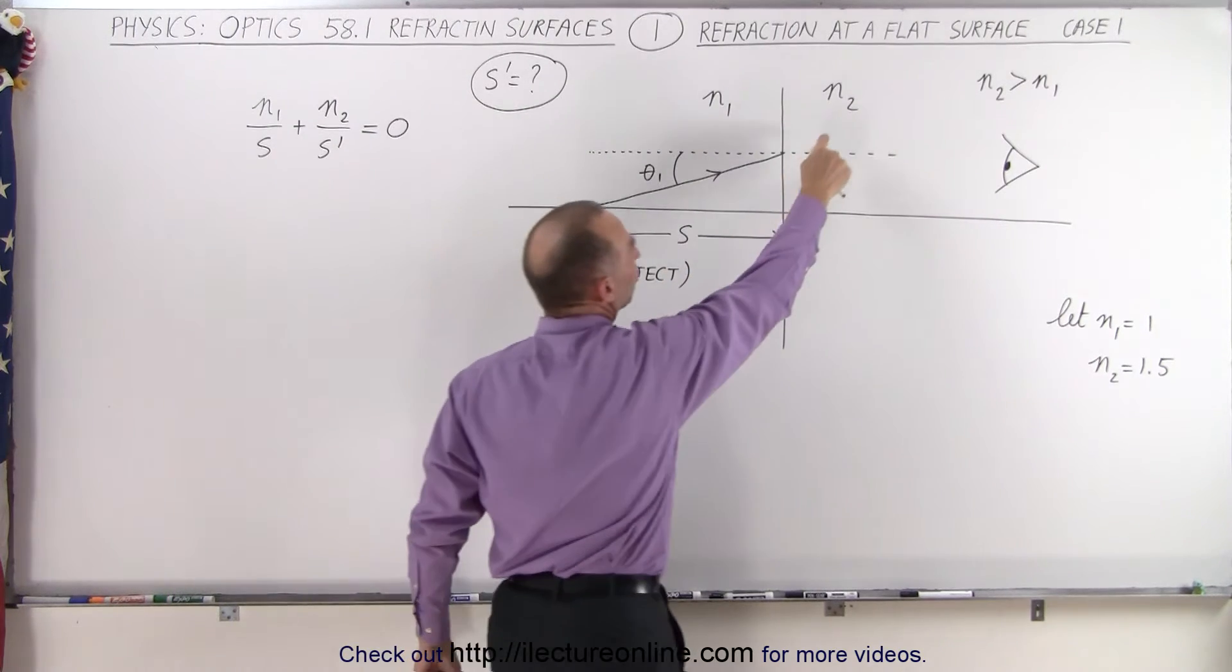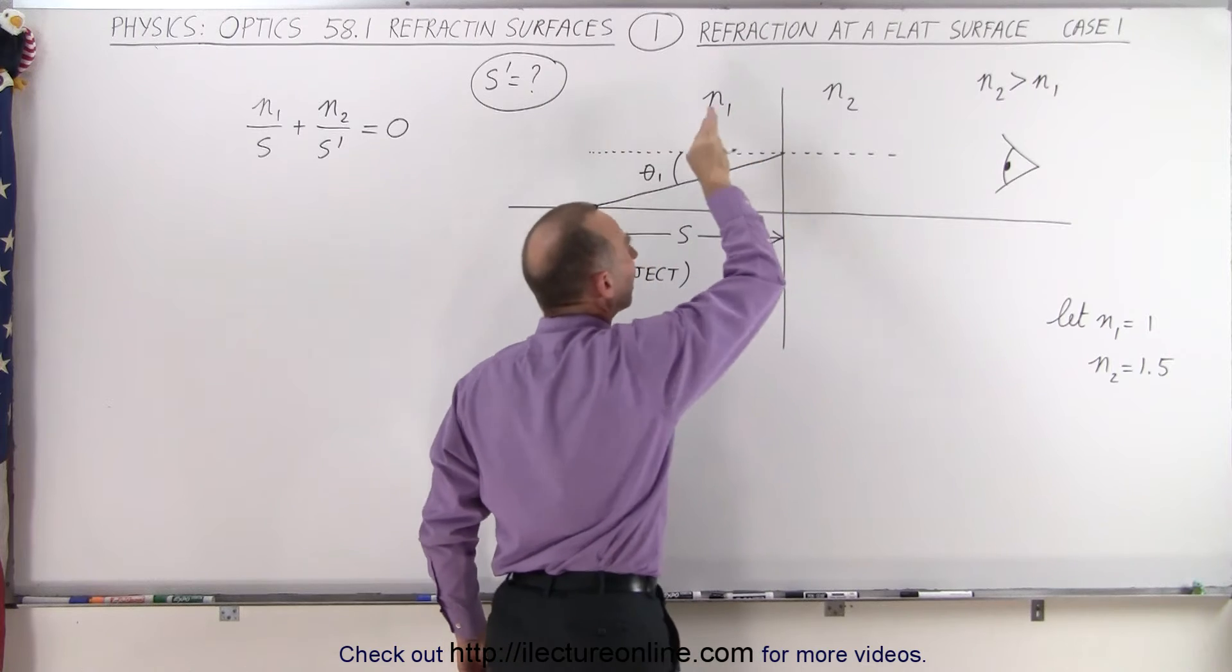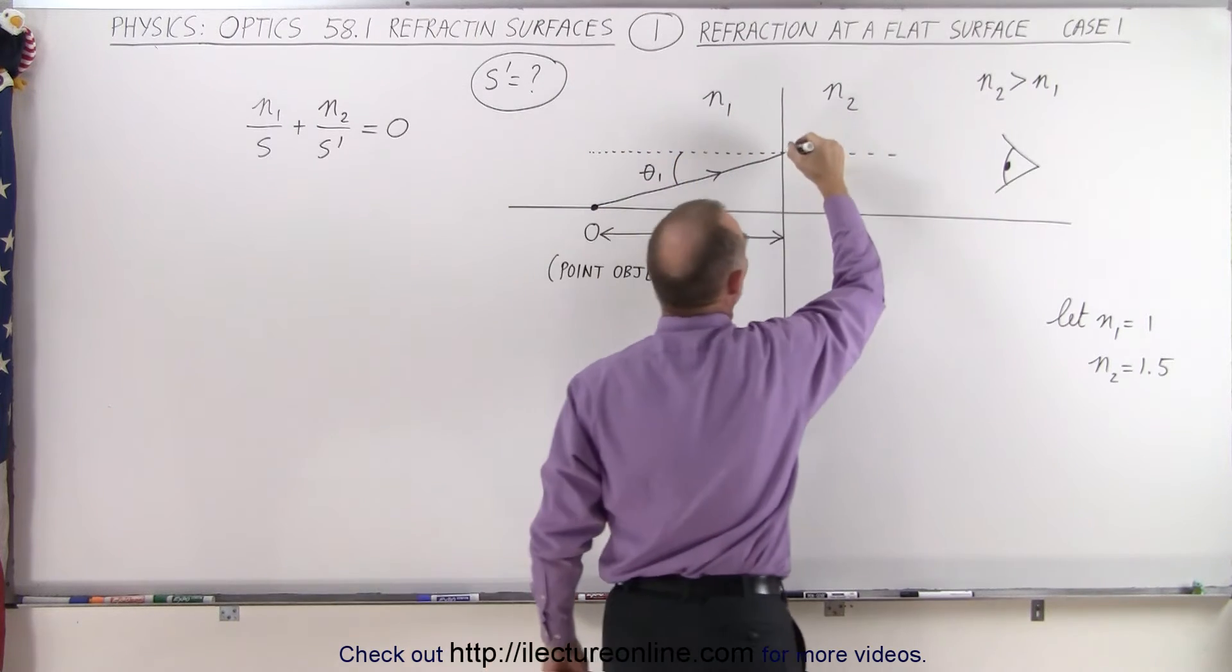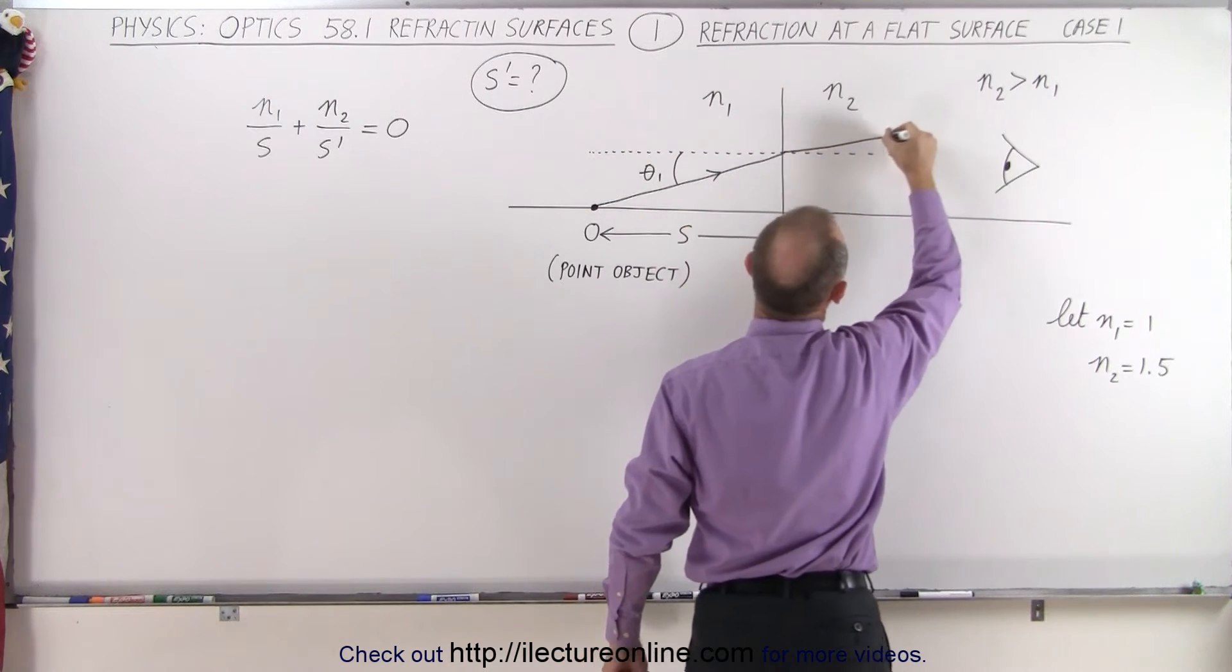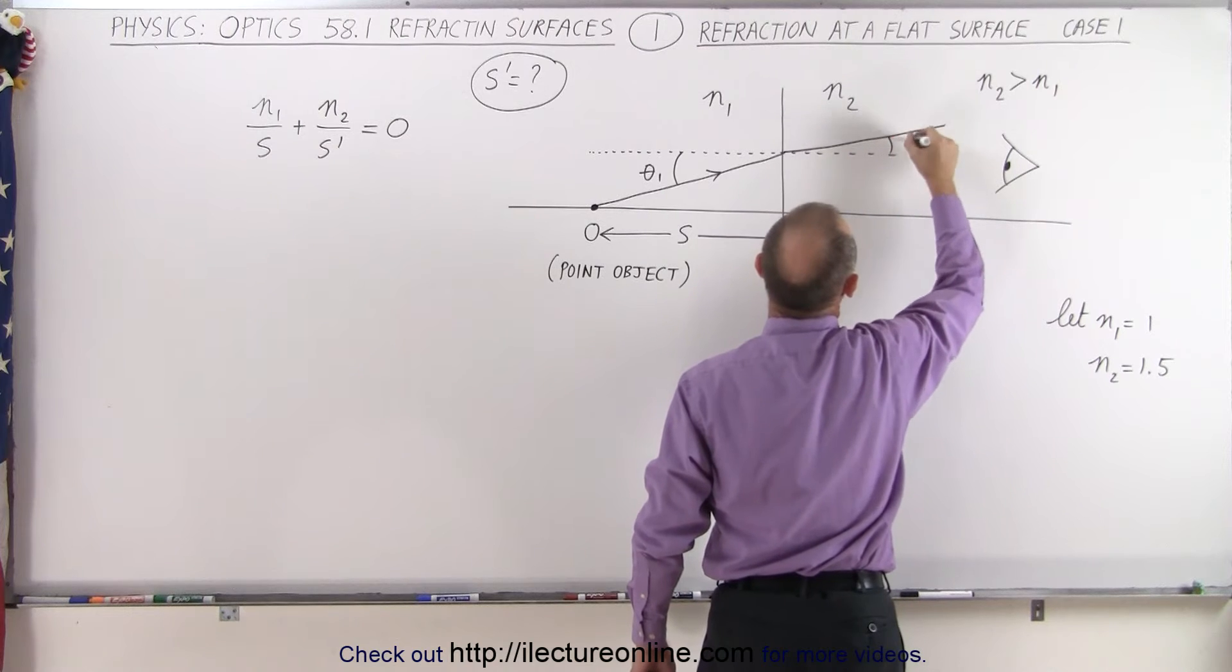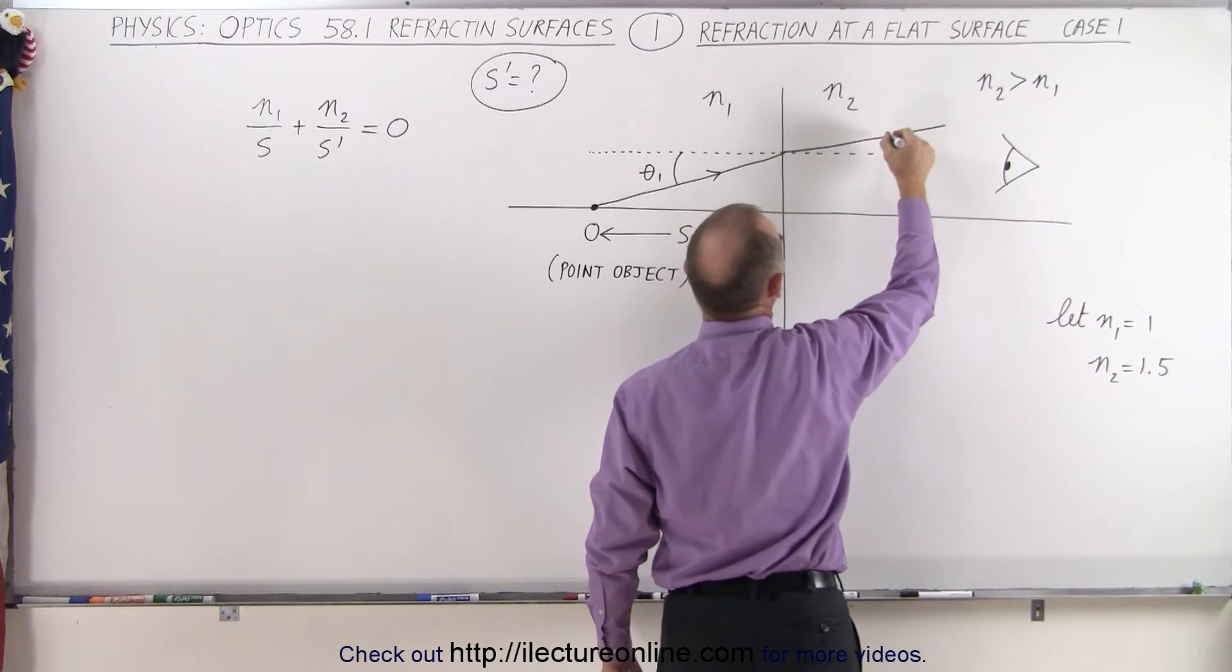Since n2 is a larger index of refraction than n1, the ray will bend towards the normal, so it'll go like this. And then you can see that the angle theta 2 is smaller than the angle theta 1.